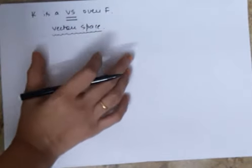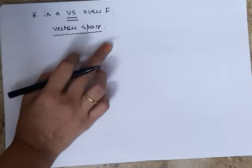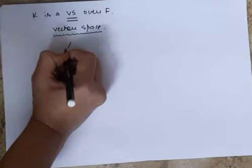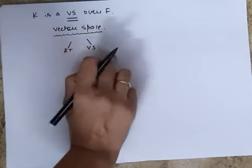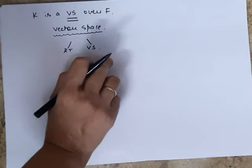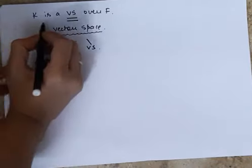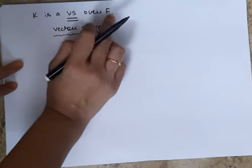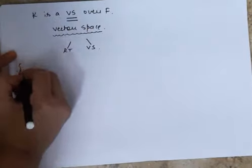I am going to assume that the concept of vector space is clear, because in the case of extension of a field, we will use both ring theory and vector space. Now we have K which is a vector space over a field F. What does this mean?